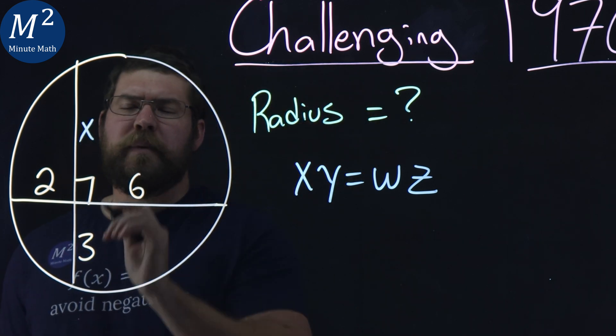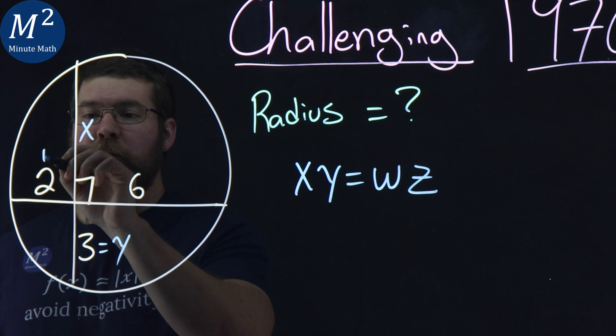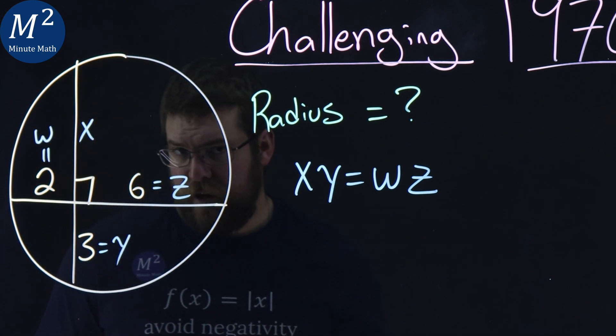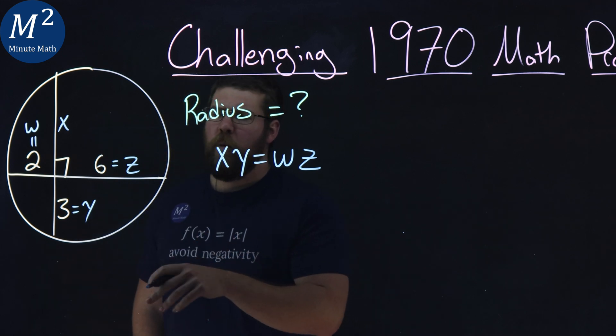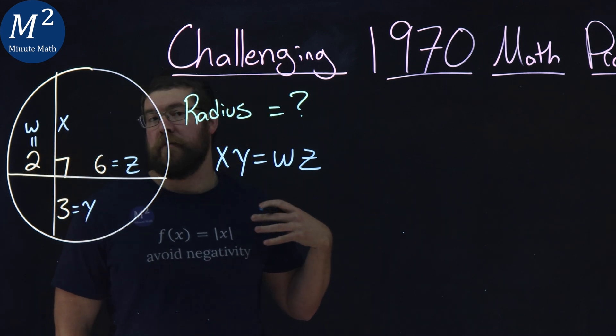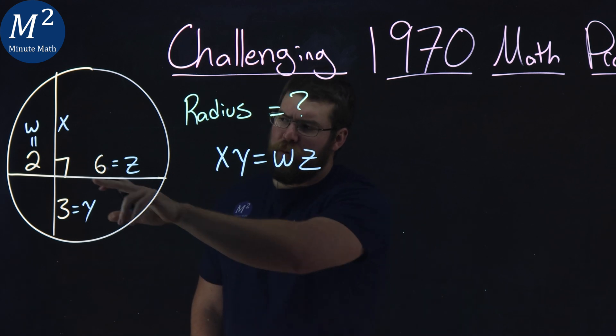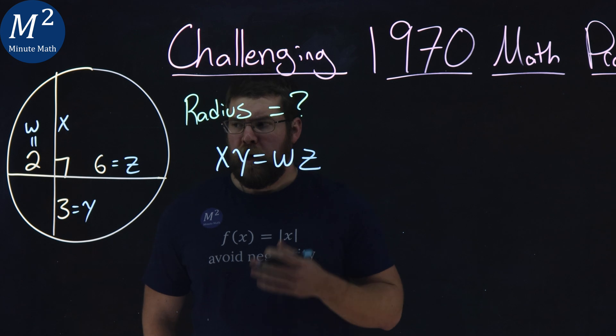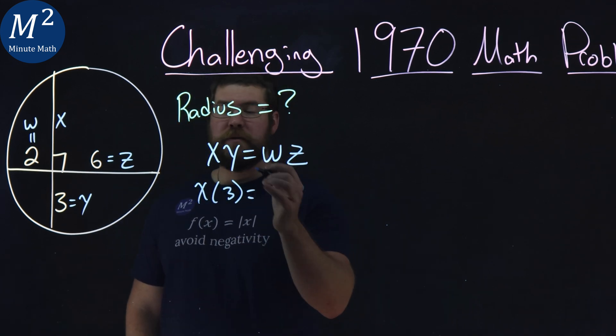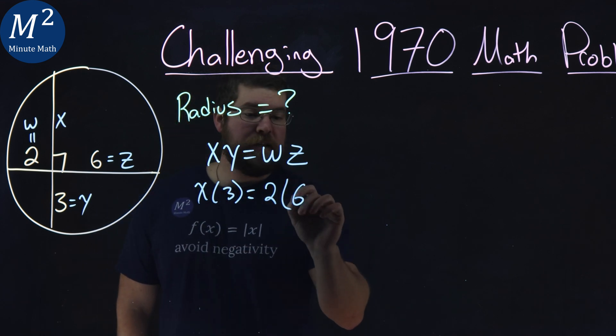Well, let's call this missing space here x. Let's call this one here equal to our y. Right here we have our w, and the 6 being the z here. So what that's telling us is that x times y is equal to w times z, and we have two chords in a circle that intersect, and it's broken up into the parts there.